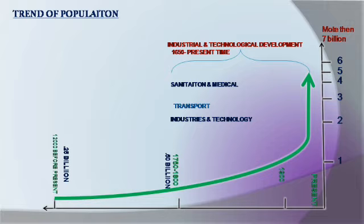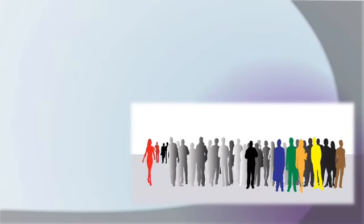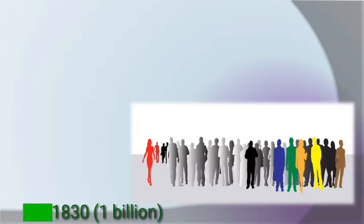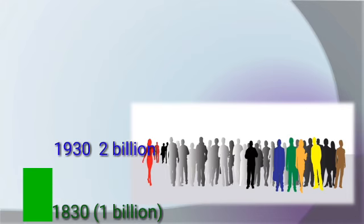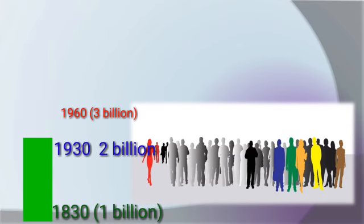From this other graph we can understand how the population doubled over time. The population in 1830 was 1 billion, and it took more than 100 years to reach the next billion. The next 1 billion increment happened within 30 years.